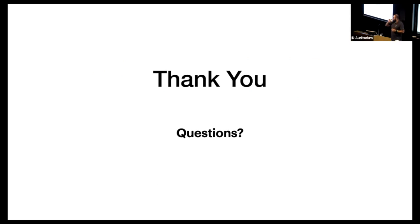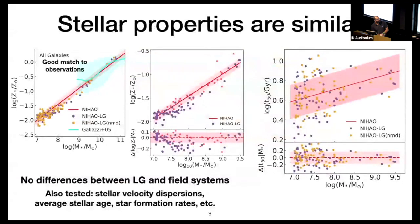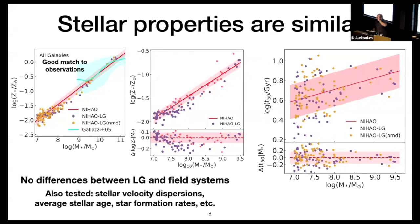There's a question on Zoom. Thank you for the great talk. I have a question: you mentioned T50 and other properties in local group versus general Ni Hao — you said most were the same, not much difference between local group and field. Is that right? Yes. Does that include the quenched fraction of dwarfs in those environments? Yes, I actually did look at quenched fractions as well, and I did not find any difference. Interesting. Thank you.